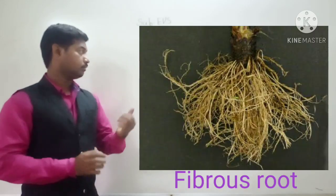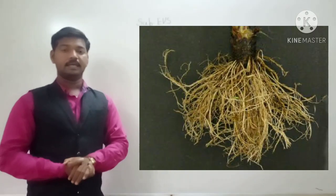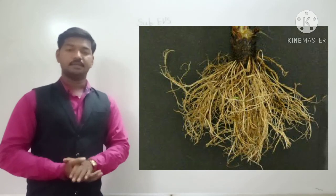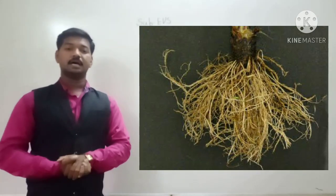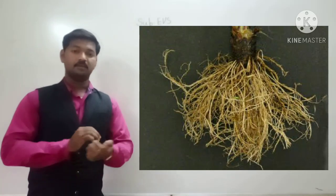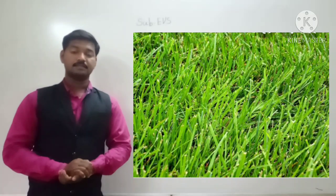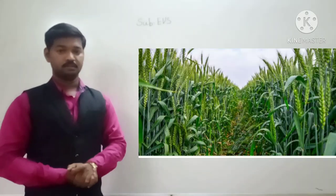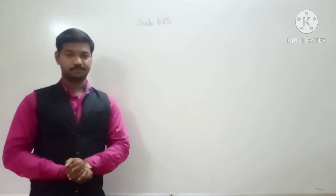Now the next type of roots: these are fibrous roots. In a fibrous root, a number of small thin roots are growing from the end of the stem. Grass, onion, rice, and wheat — they all have fibrous roots.